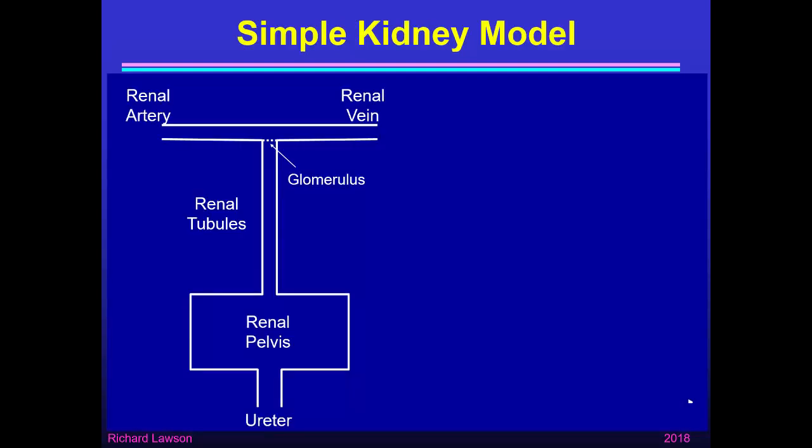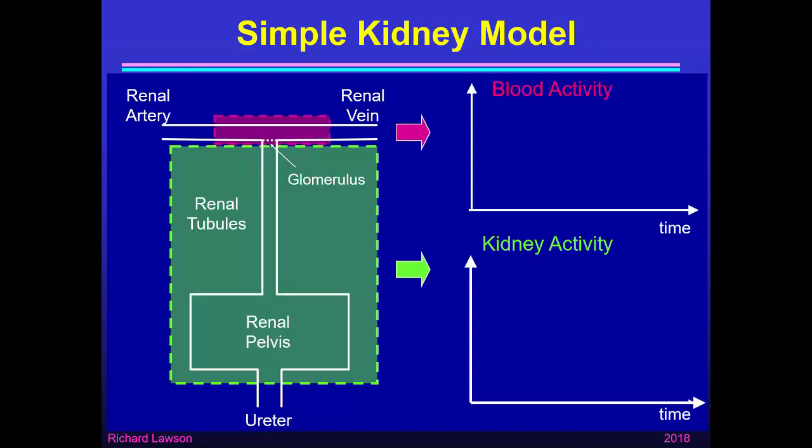Here's a simple model of the kidney based on blood coming in through the renal artery and going out through the renal vein, passing the glomerulus of each of the nephrons represented by a long thin renal tubule, emptying into a renal pelvis and coming out down the ureter. If we are interested in the renogram we're interested in activity in the blood, represented by the red region over the renal artery and renal vein, and activity in the kidney represented by the green region which covers the renal tubules and the renal pelvis.